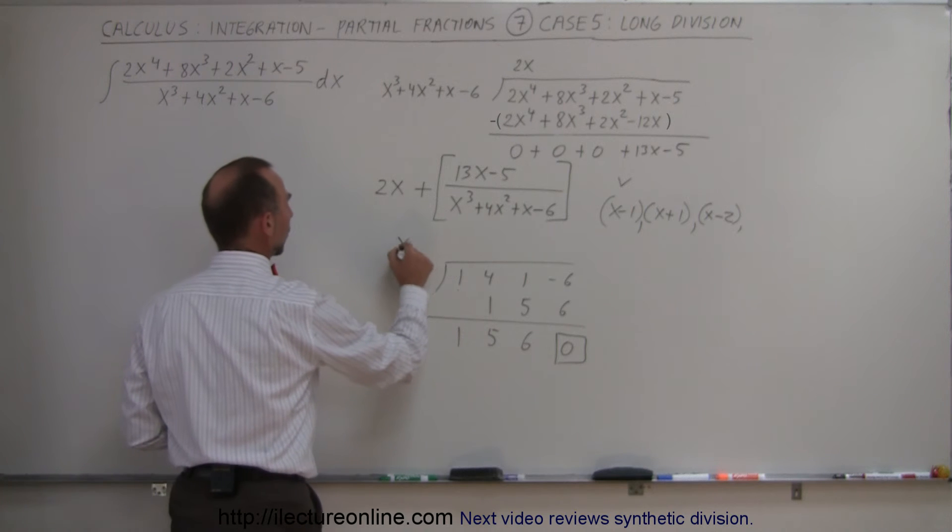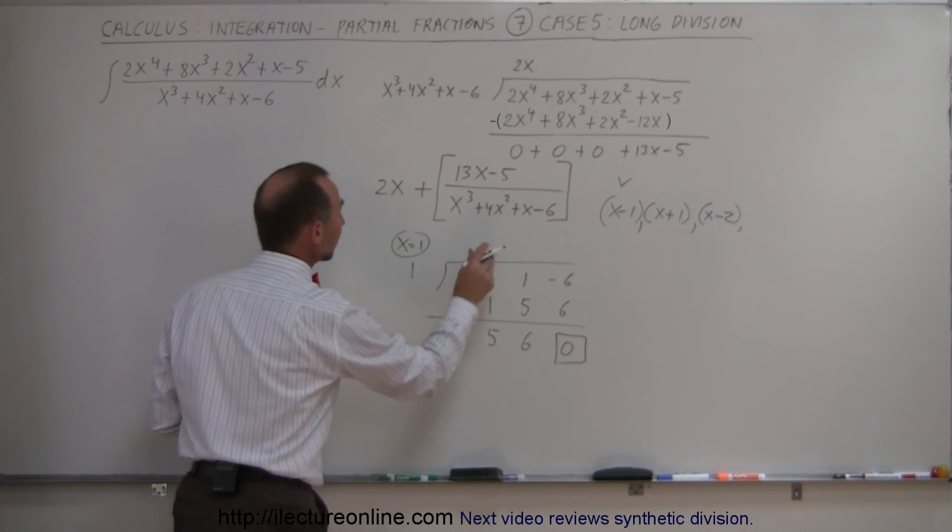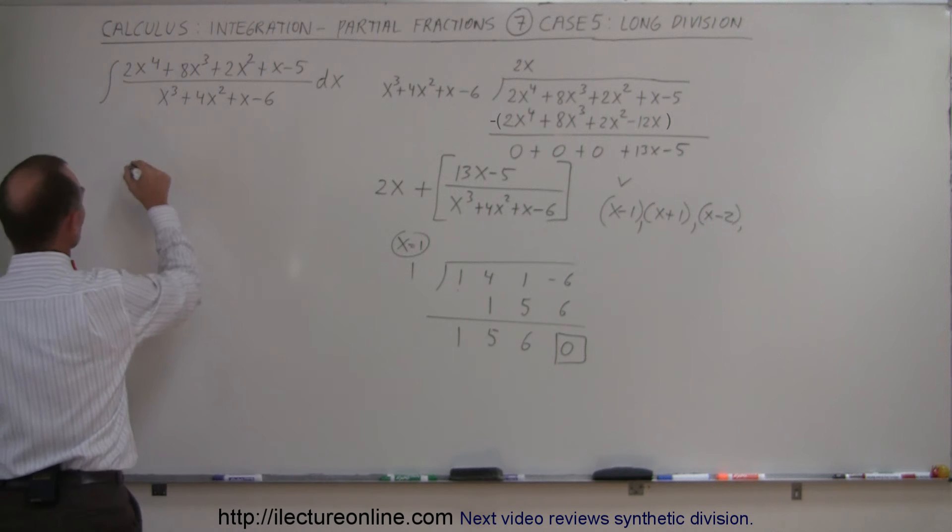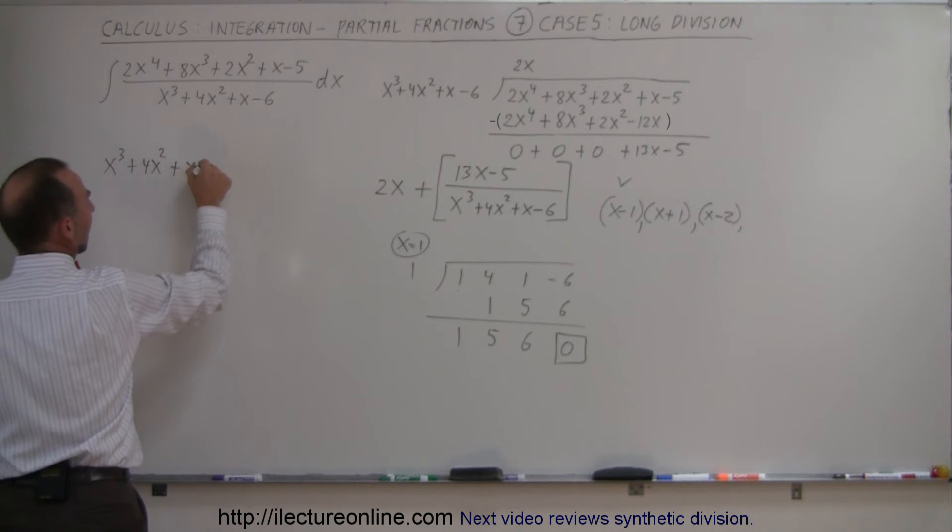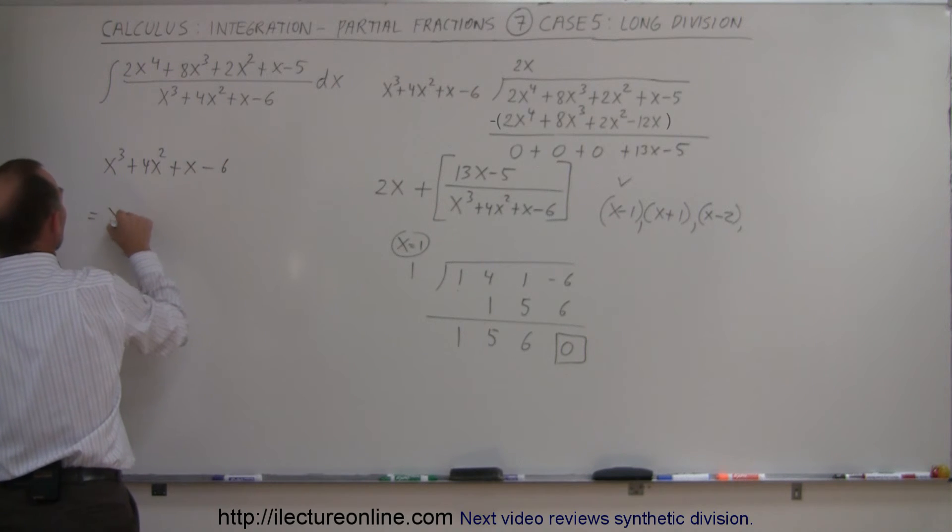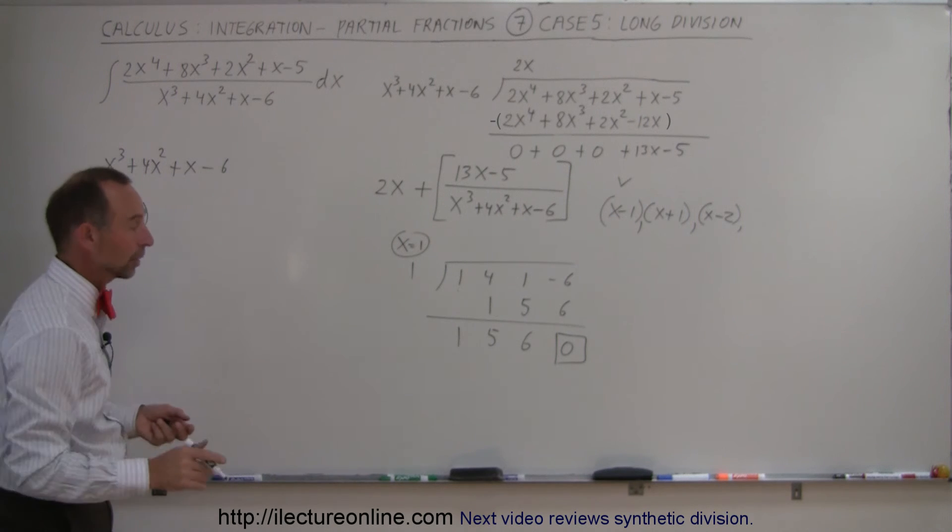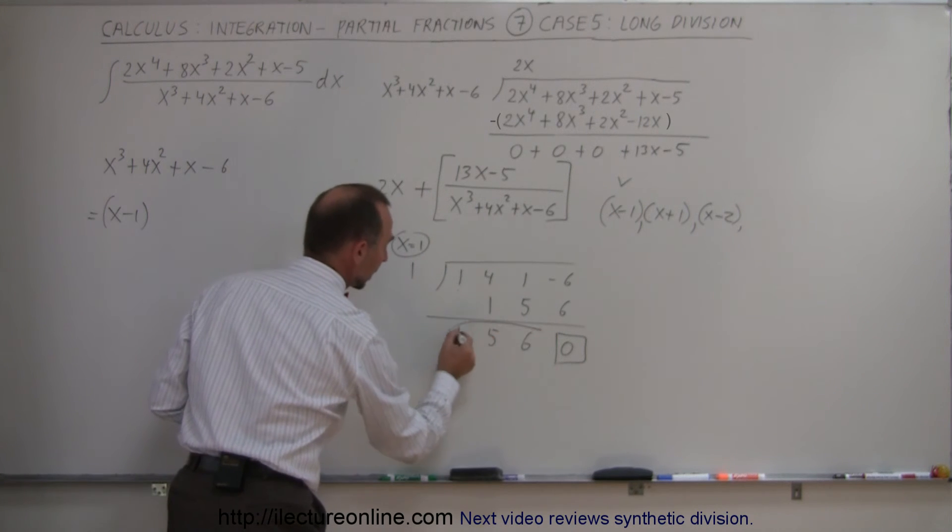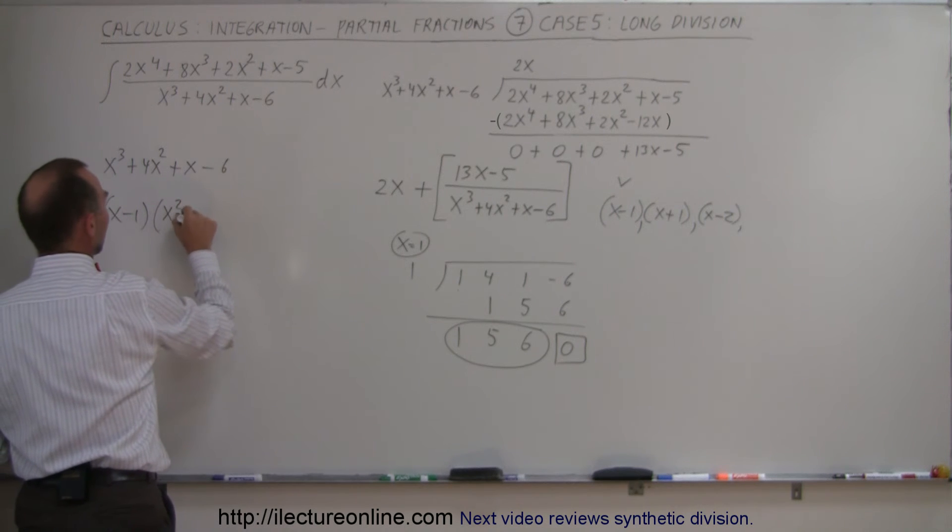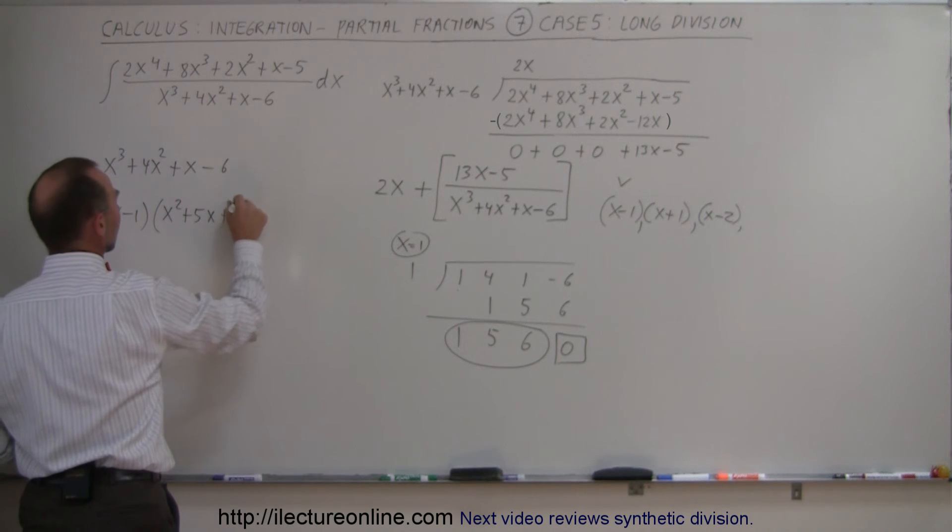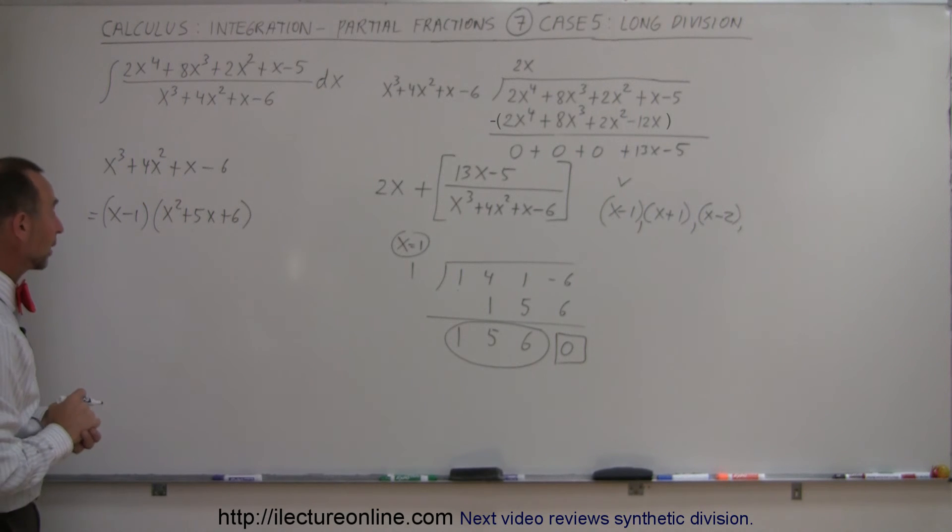So x equals 1 is one of the factors, which means I can take this denominator and rewrite it as follows. So x cubed plus 4x squared plus x minus 6 can be rewritten as x minus 1 times the remainder. So what is the remainder? Well, the remainder is found right here. The remainder would be x squared plus 5x plus 6. Now, can we factor this one since it's only a quadratic equation or a quadratic factor?